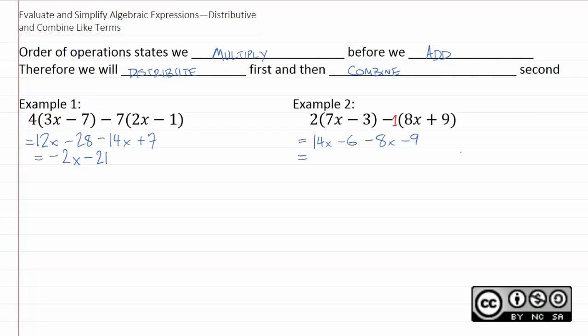Again, we combine like terms. 14x minus 8x is 6x. Negative 6 minus 9 is negative 15. So just remember, distribute and combine like terms. And do the distributing first.